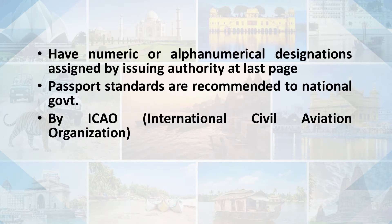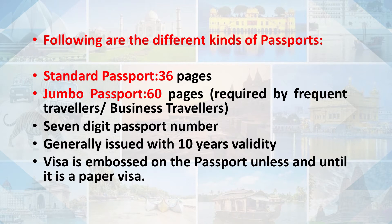Passports have alphanumeric designations assigned by the issuing authority on the last page. Passport standards are recommended to national governments by the International Civil Aviation Organization. We have the standard passport, which is a booklet of 36 pages, and the jumbo passport of 60 pages for heavy or business travelers. Passports bear a 7-digit passport number and are generally issued with 10 years validity.